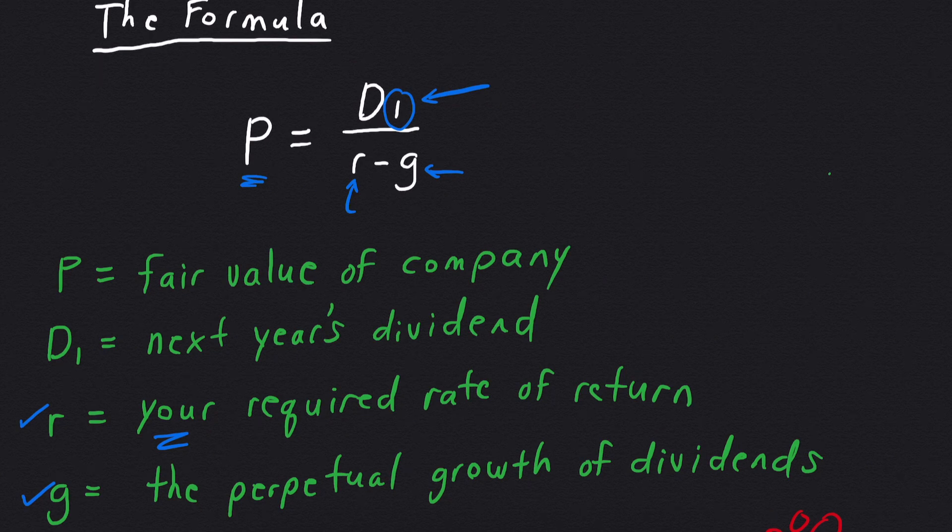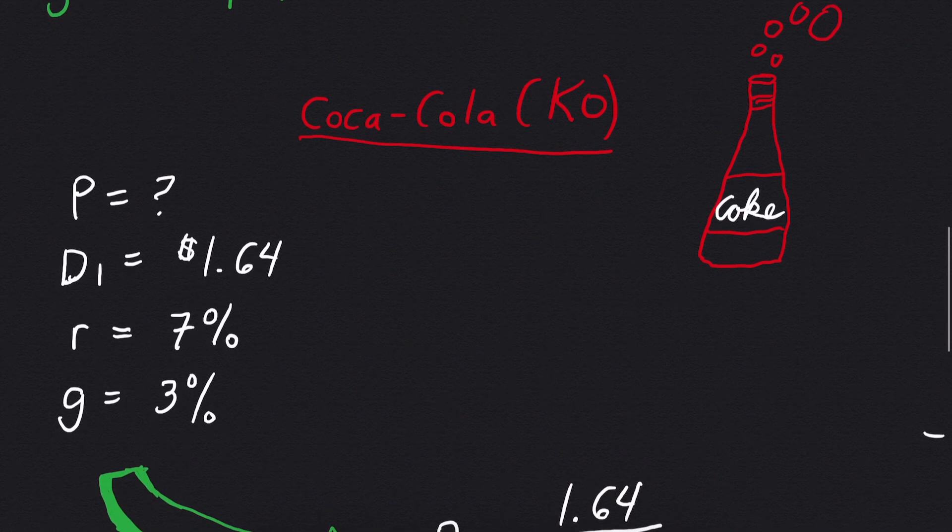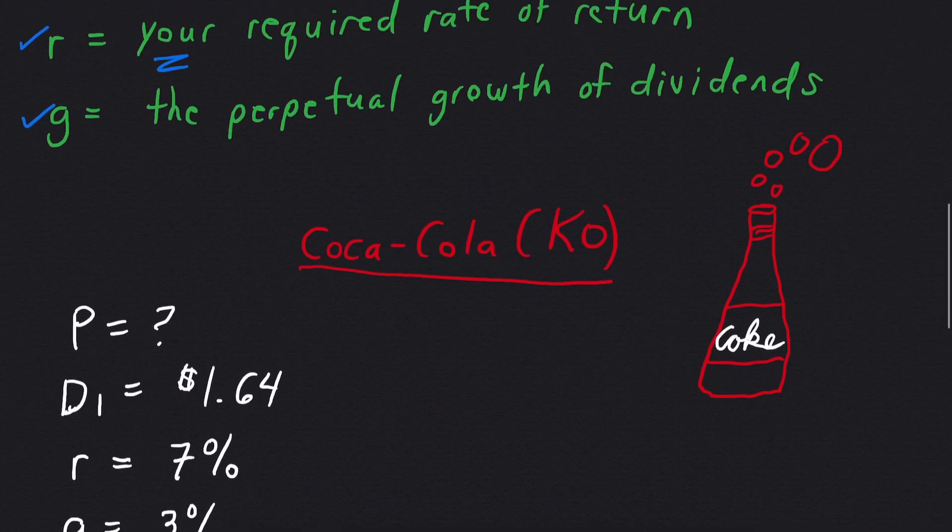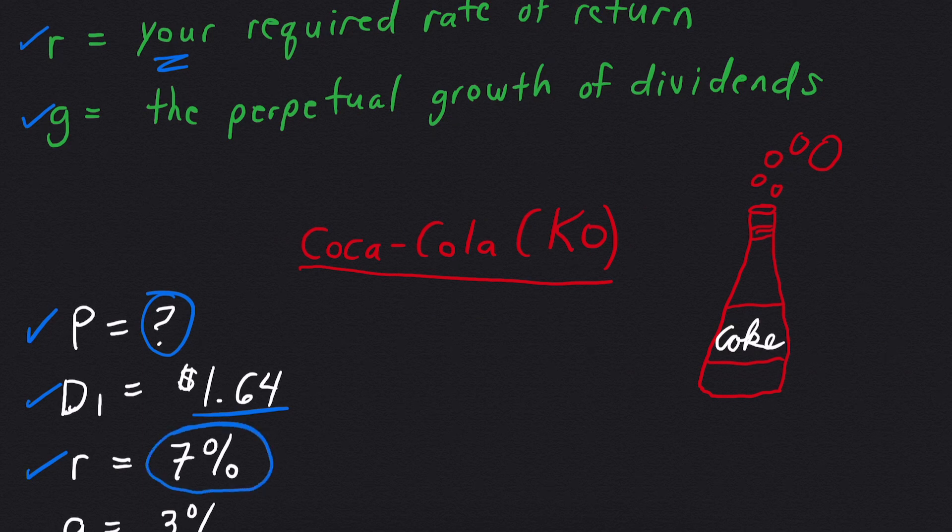So let's put this formula into action. And we'll evaluate the stock of Coca-Cola. So here we have the price of Coca-Cola, which is what we're trying to find. It's a question mark, we don't know this yet. The dividend, if you look it up online, is $1.64 per year. So we're going to use that.